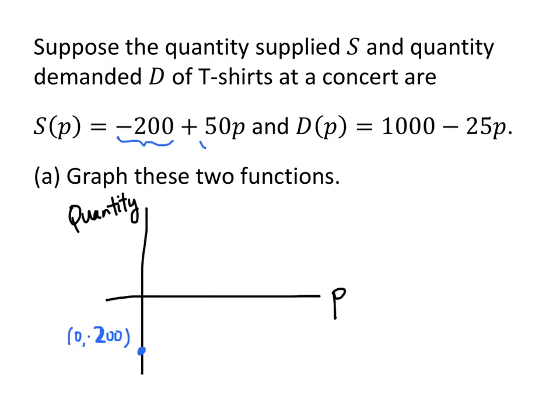I also can tell that because of the 50p term, that the slope of my supply graph is positive. In fact, positive 50. But since we don't have a scale on our axes, we're just going to draw a general positively sloped line. If we had a grid or tick marks or a scale here, then we could plot a couple more points and get a more accurate graph of our function. But that's a pretty good rough graph of what our supply curve looks like. So that's S, our supply graph.